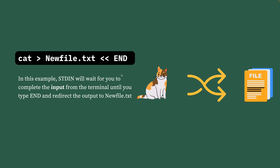In this example, standard input will wait for you to complete the input from the terminal until you type the end keyword, and the redirection of the output happens to a new file called new.txt. The cat command denotes a cat operation, and it does a redirection to the new file using the greater than symbol — that's an output redirection. The double less than input redirection symbol will keep waiting until the end keyword is typed in the terminal.